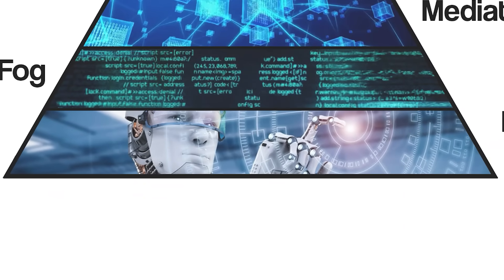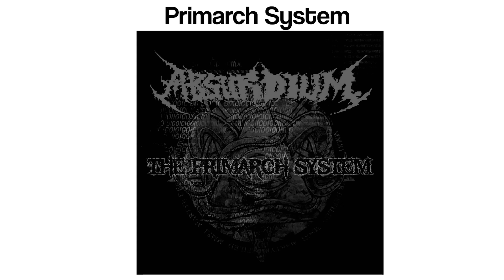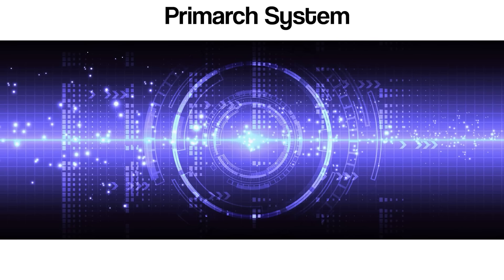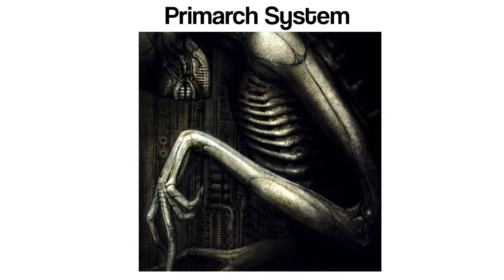The Primarch system is a concept drawn from speculative models of the Internet that explore its deepest and most mysterious levels. It is often described as the theoretical base layer or core of the Internet's entire structure, a digital layer where the foundational mechanisms of data control, system behavior, and information flow are not only hosted, but actively governed by autonomous, possibly sentient systems. The term Primarch implies a kind of supreme authority or origin point, suggesting that this layer functions as the Internet's command hub, if not by design, then through the evolution of artificial intelligence or deeply embedded legacy code.